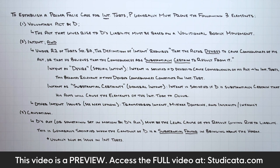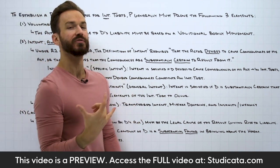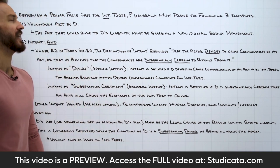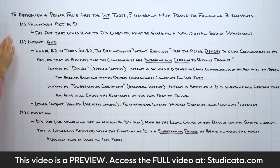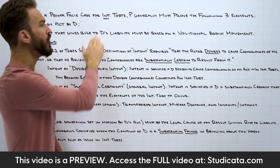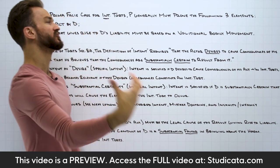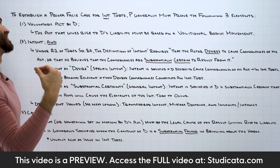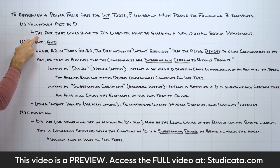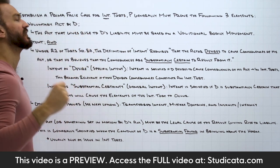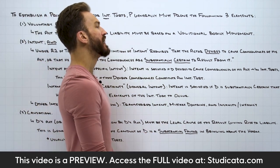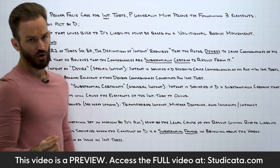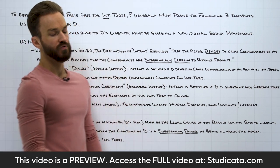With that, we can jump into these elements and break down these core features of almost all intentional torts. Starting with our first requirement: to establish a prima facie case for almost all intentional torts, the plaintiff generally must prove the following three elements. Number one, we need a voluntary act by the defendant. The act that gives rise to the defendant's liability must be based on a volitional bodily movement.